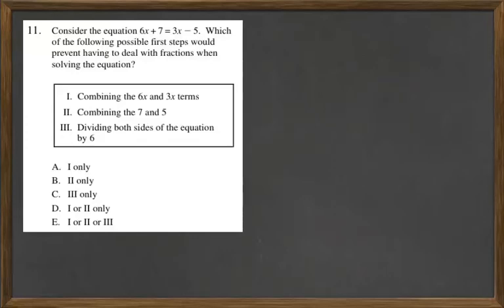Consider the equation 6x + 7 = 3x - 5. Which of the following possible first steps would prevent having to deal with fractions when solving the equation? So we want the very first thing we do to end up resulting in no fractions as we're doing the problem.